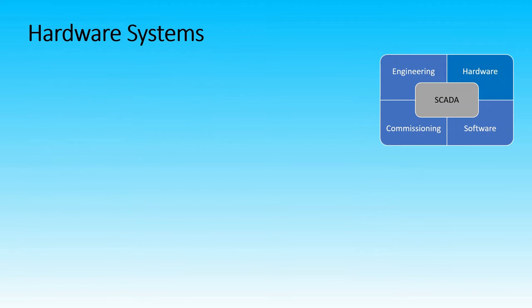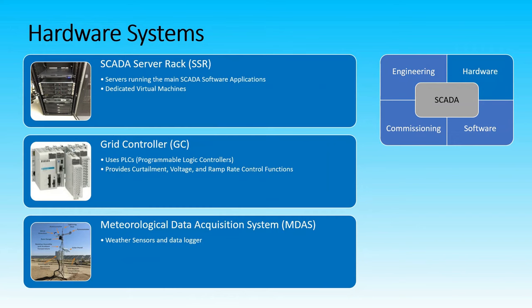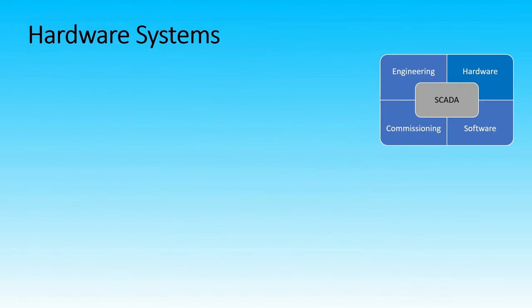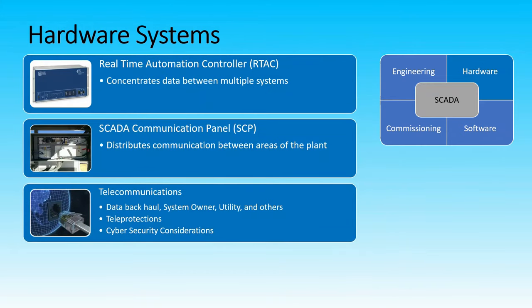When it comes to hardware considerations, a robust SCADA server rack is needed for large PV plants. Virtual machines are more suitable due to their flexibility and manageability. Grid controller PLCs are definitely needed for controls. As for the weather station, there is already a wide range of equipment to choose from. If real-time automation is needed, RTAC is the best way to go. For a large-scale PV plant, distance from the substation building to the inverters out in the field should be considered. This is where fiber line comes into play, terminated through the SCADA communications panel.